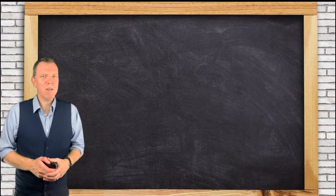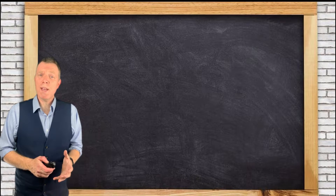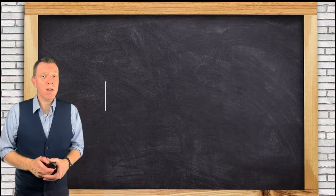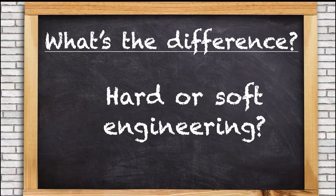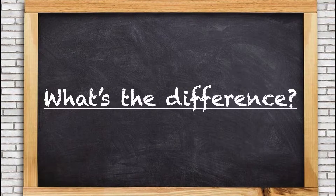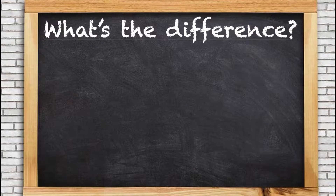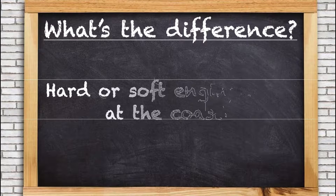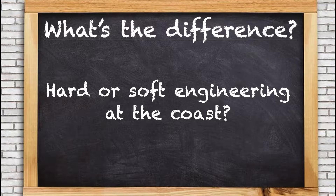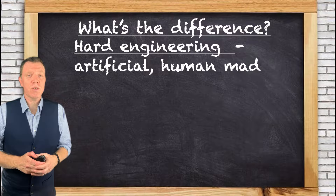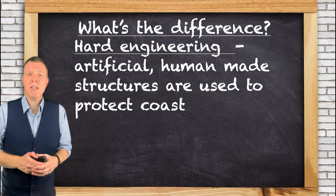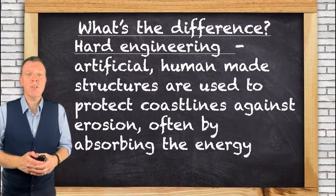The coast is the most dynamic physical environment and engineers need to think of ways to protect it. There are both hard and soft engineering strategies, but what's the difference? Hard engineering strategies are where artificial, human-made structures are used to protect coastlines against erosion, often by absorbing the energy of waves.